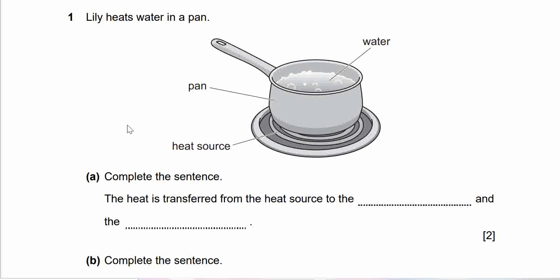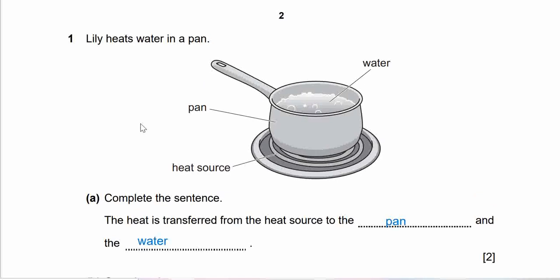Question 1: Lily heats water in a pan. Complete the sentence: The heat is transferred from the heat source to the what and the what? I believe you know the answer guys. Pause if you still need time to think. Let's check out the answer, so it's pan and the water. It is transferred from the heat source to the pan and water.